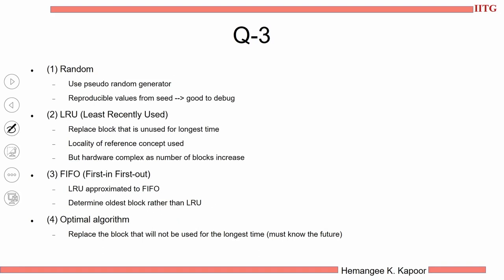The first choice is random. We will use a pseudo-random generator to decide which block goes out, and the seed will be fixed so that we can reproduce the result for debugging.